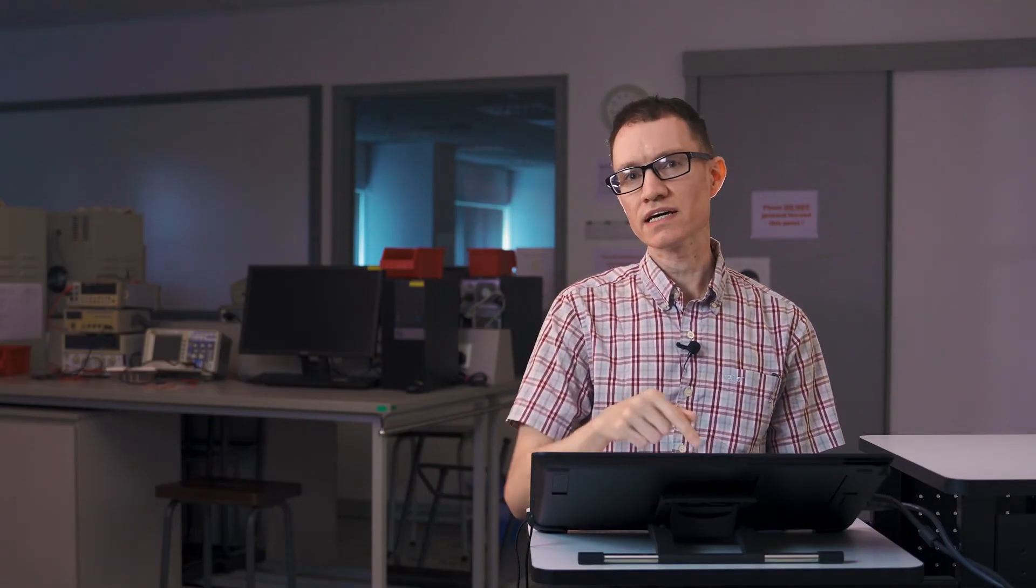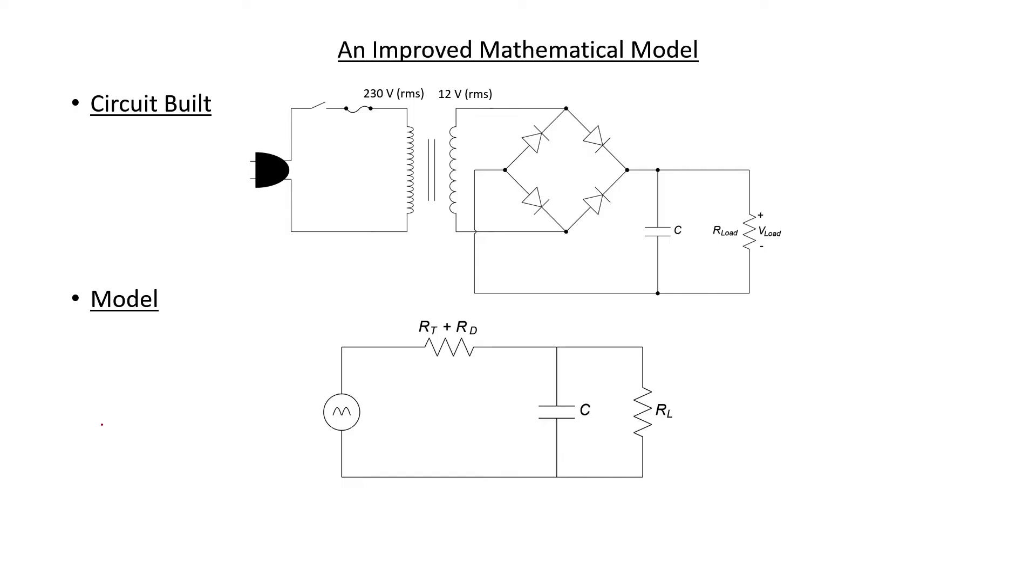By the way, R sub D is not exactly the resistance of one particular diode because at any particular moment two of the diodes are actually going to be turned on here. This is the model that we're going to be using.